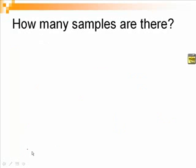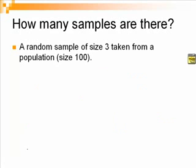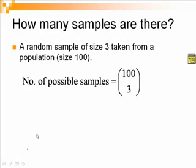How many samples are there altogether? A random sample of size 3, taken from a population of size 100, will have a possible number of 100 choose 3 samples.